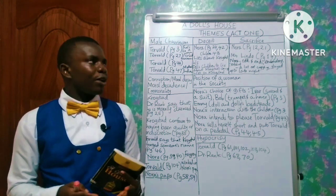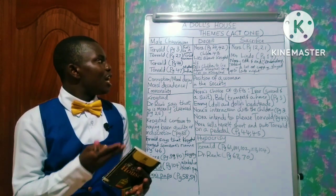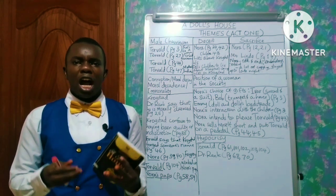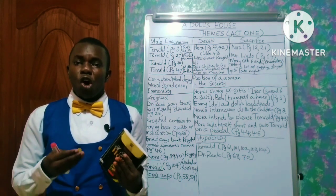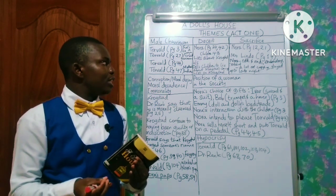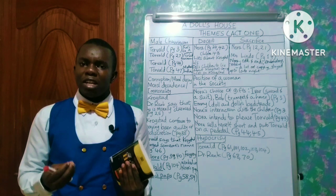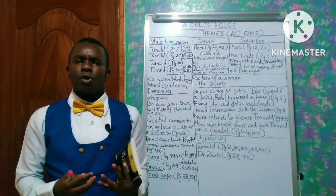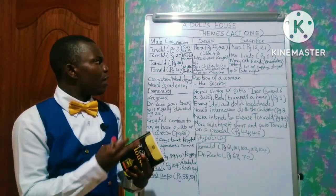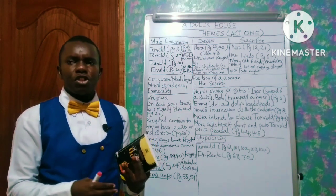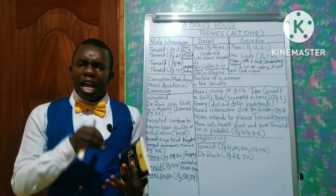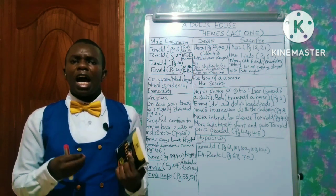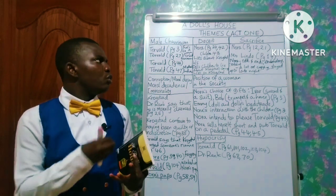I have done such an example here on the board that I would want us to look at. The first theme that I've considered is male chauvinism. For the purpose of this video, I have used this illustration only on Act 1. For instance, if a candidate is reading through this text and you have already drawn up your various columns at the back of your book, you will have the first column as having male chauvinism. As you go on with your reading, any instance of male chauvinism that you come across in that given act, you note it down.